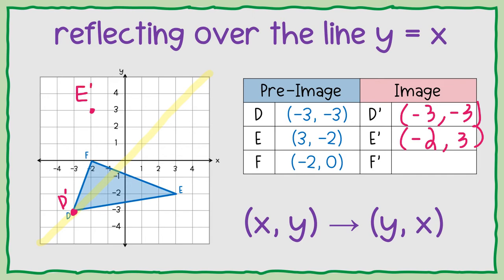And last, for point f, f prime will be 0, negative 2. So right here.